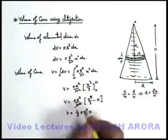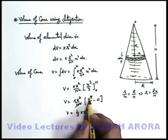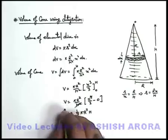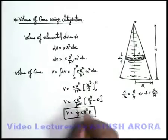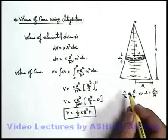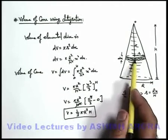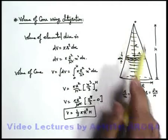This h² will get cancelled out from this third power of this value of h. So here this is the volume of the cone, which we have calculated again by integrating elemental disc from its top to bottom.